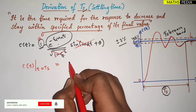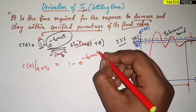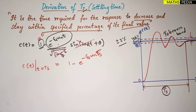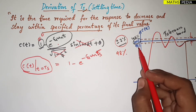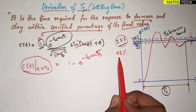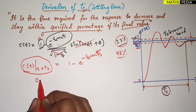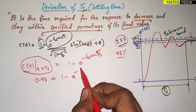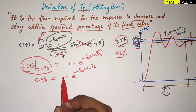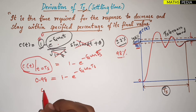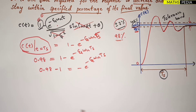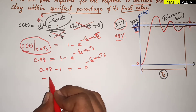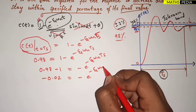So c(t) at t = Ts equals 1 minus e^(−ζωn·Ts). For the system to lie within the plus or minus 2 percent tolerance band, we consider 98 percent of the final value, written as 0.98. So: 0.98 = 1 − e^(−ζωn·Ts). Rearranging, we get 0.98 − 1 = −e^(−ζωn·Ts), which gives −0.02 = −e^(−ζωn·Ts).